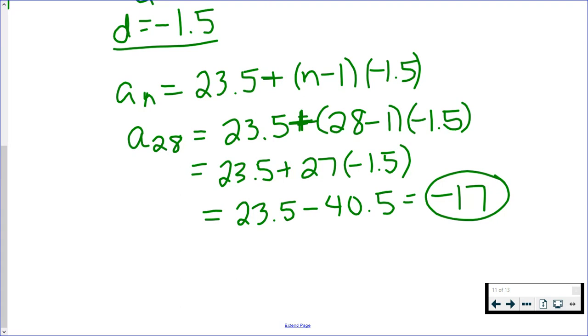So the reason you want to find your explicit formula is because you can find whatever term it's asking for in the problem by just replacing n. But in order to write your explicit formula, remember you need to find the first term and the common difference, which is what we started with. Once you have that information, you can find any term in the sequence.